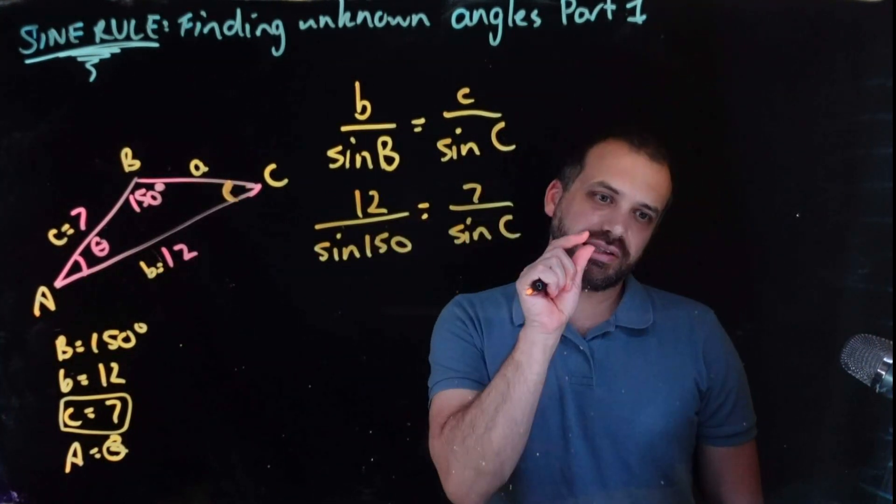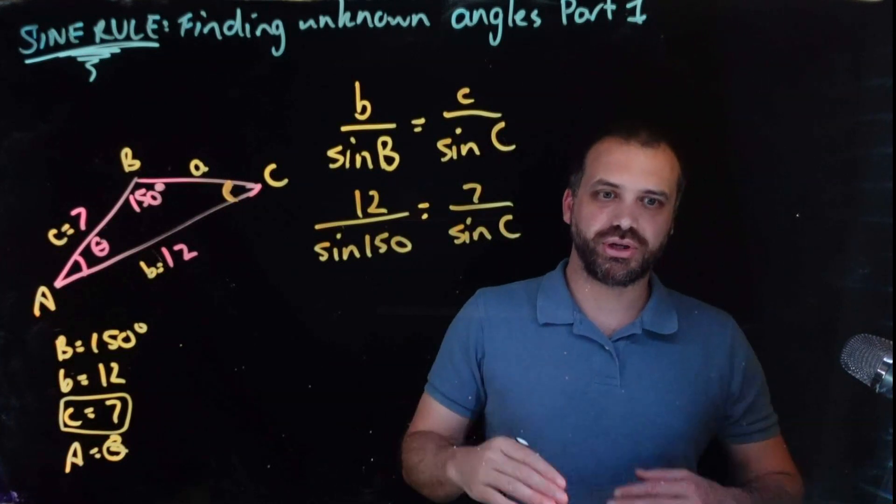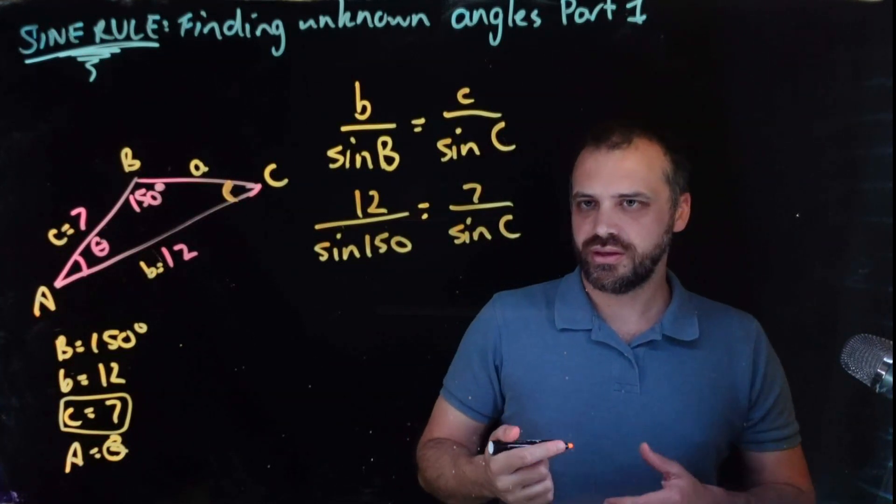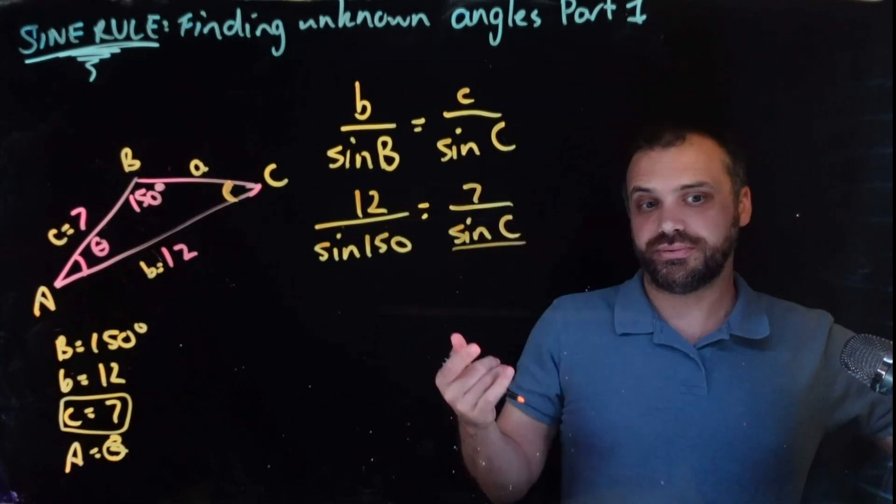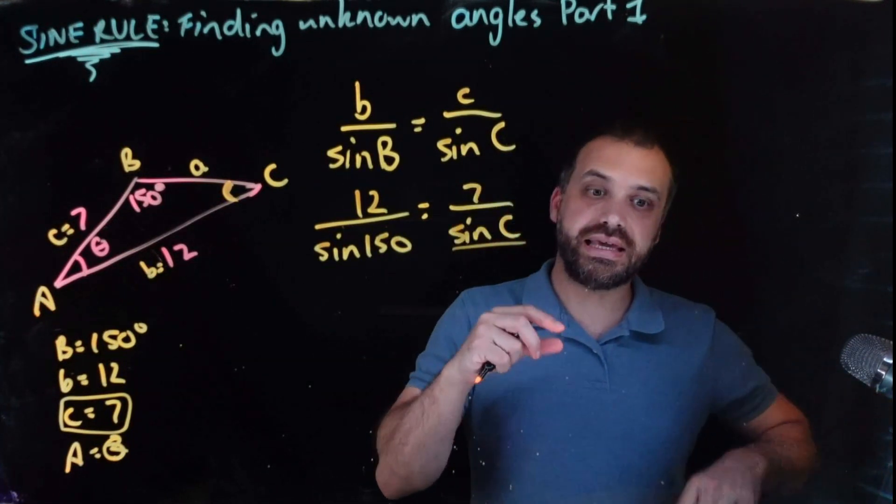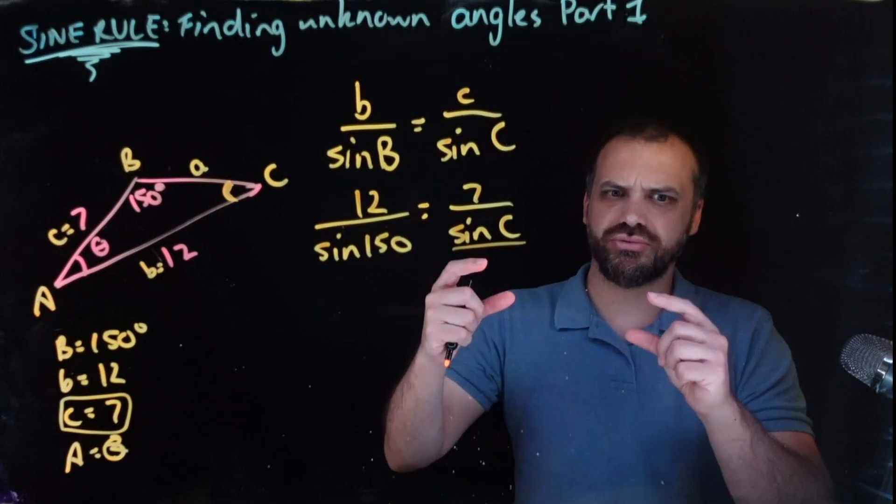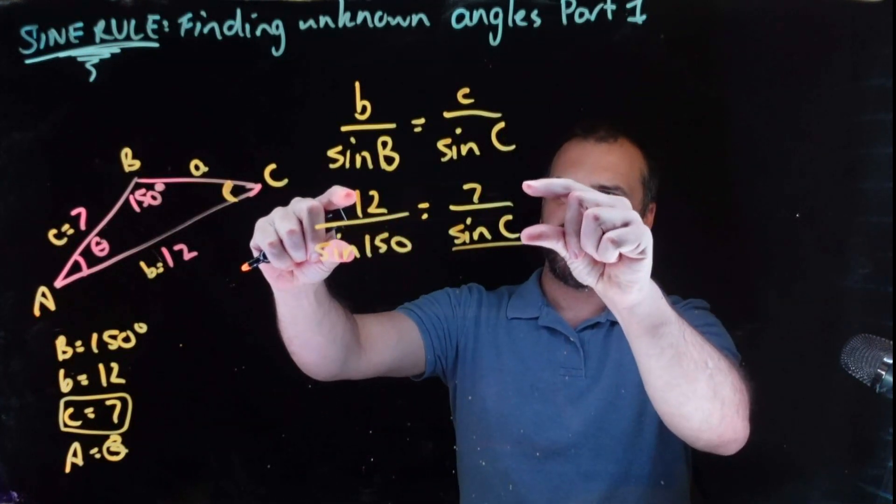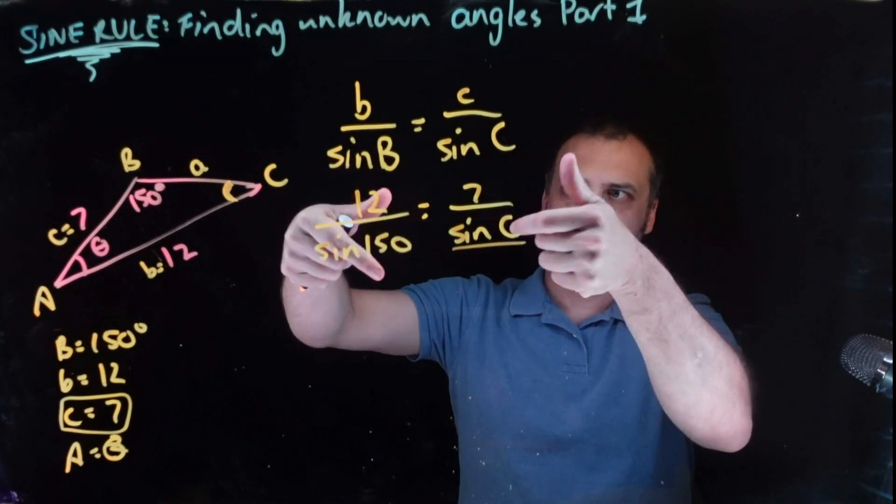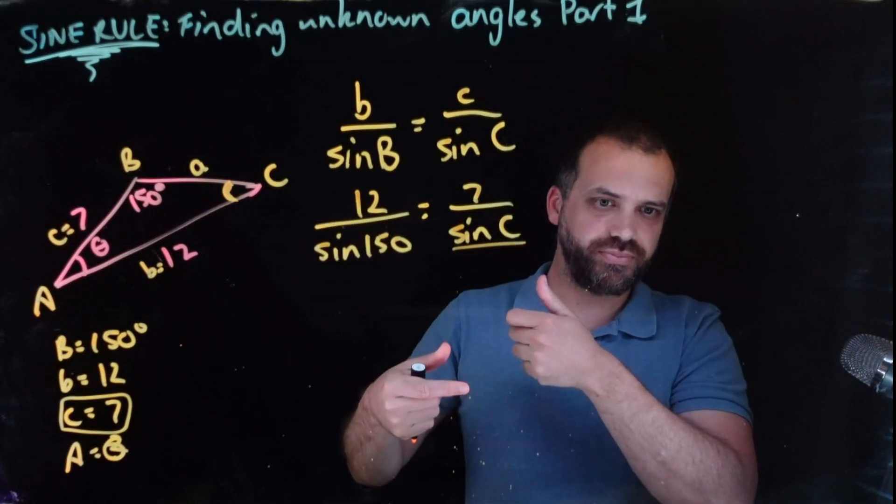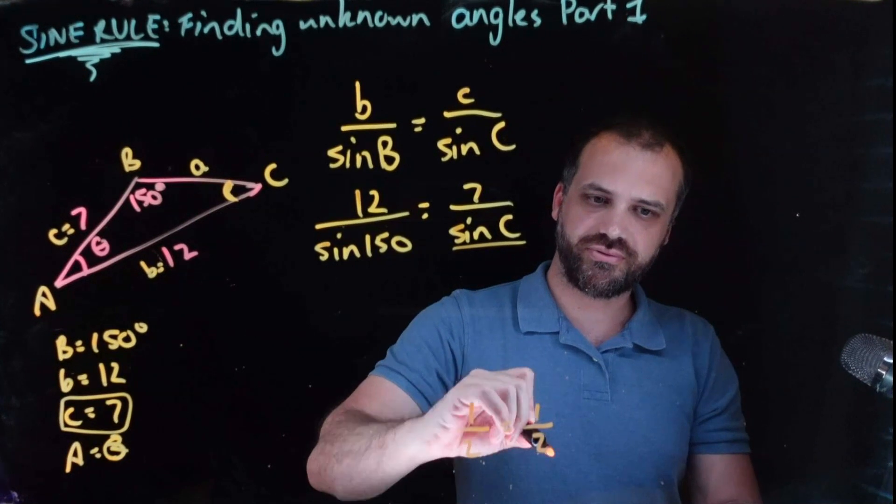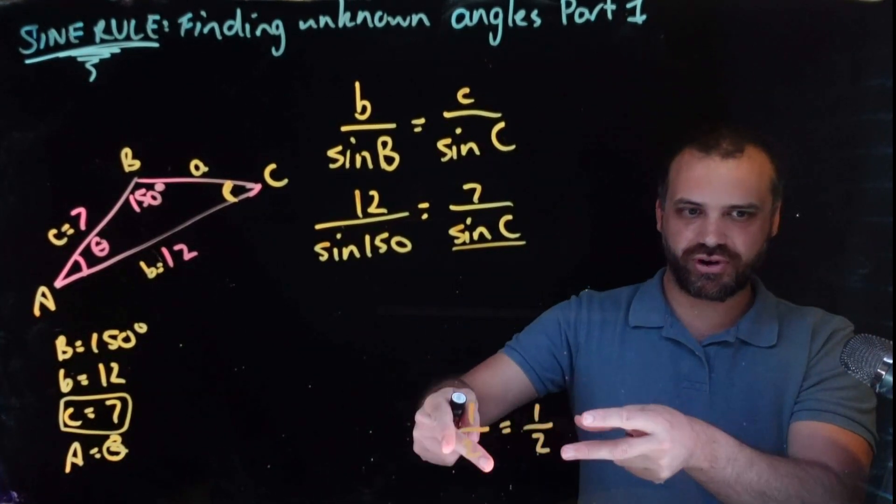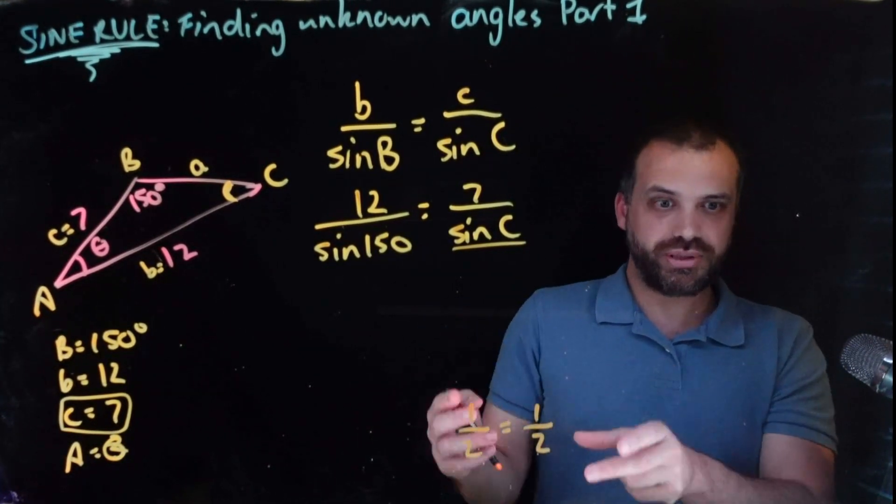So rearranging this is just a little more involved, because we've got to do sort of two steps here. We need this sine C to be on the top, right? Now, an easy way to do that is just to rewrite this equation that way, just to flip both sides of it, right? One half equals one half. If you flip both sides of a fraction, you get two equals two. You get the same thing.